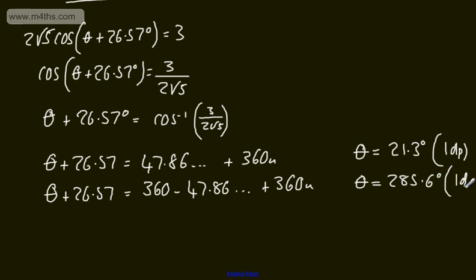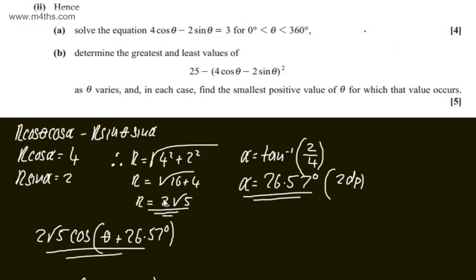Both are to one decimal place. Any subsequent solutions adding 360 would fall outside the interval, so we get exactly two solutions: 21.3° and 285.6°. This should be sufficient for the four marks. In part B, for five marks, we're asked to determine the greatest and least values of 25 minus (4cosθ minus 2sinθ)² as θ varies.